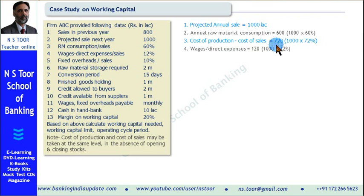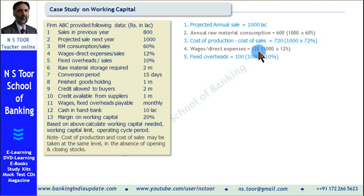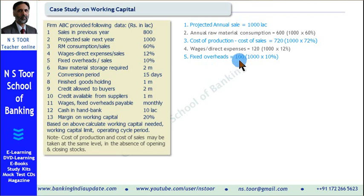Wages and direct expenses are 12% of the projected sale, hence 12% of 1000 = 120. Fixed overheads are 10% of sales, so 10% of 1000 = 100. Fixed overheads include office expenses, administrative expenses, selling expenses, marketing expenses, depreciation, etc.